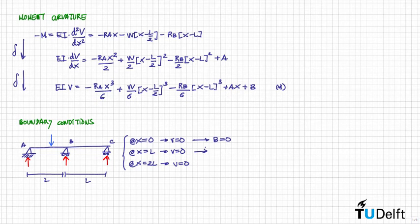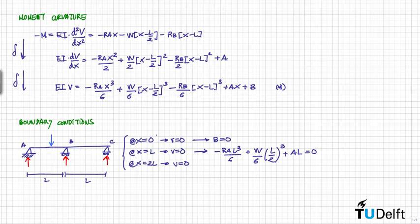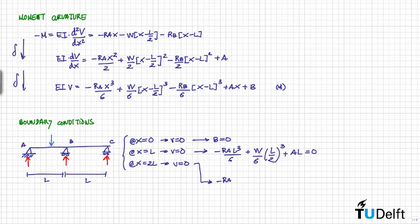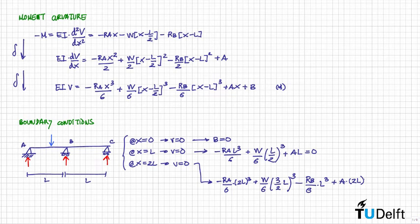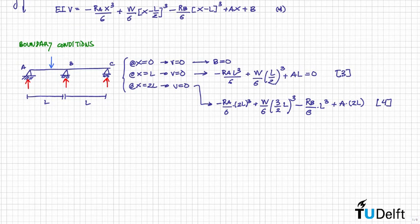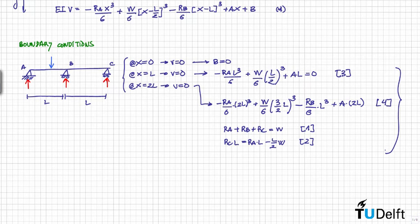For the second boundary condition, the Macaulay bracket at x=L is zero, giving us equation three. For the third condition at x=2L, all brackets are activated, yielding equation four. We now have two additional equations — equations three and four — which together with equations one and two form a complete set.